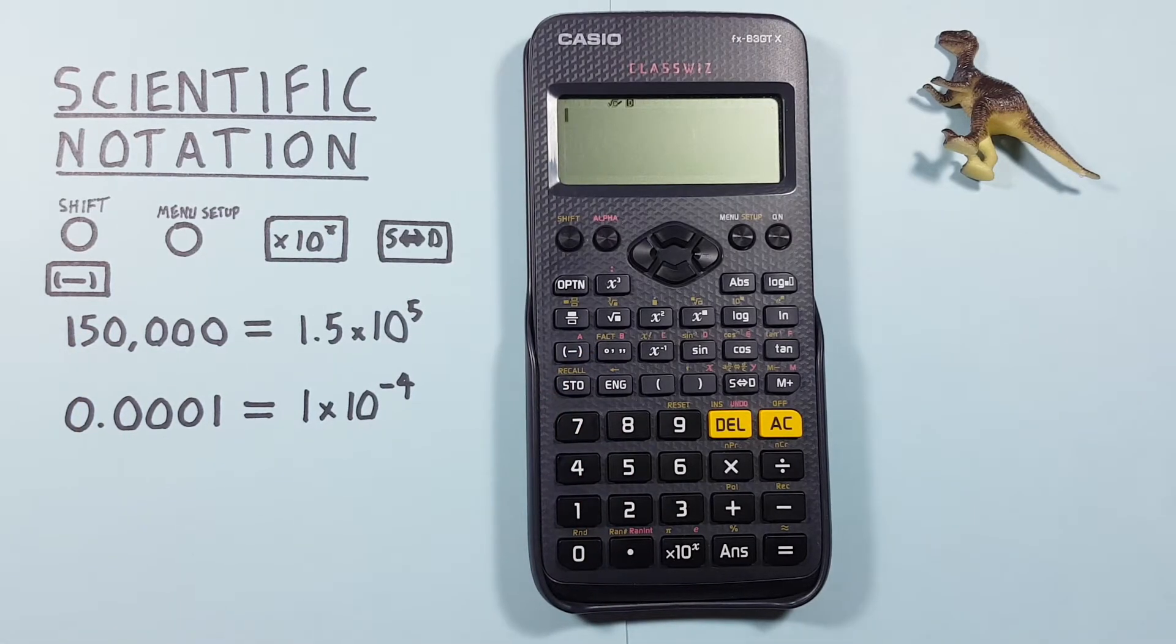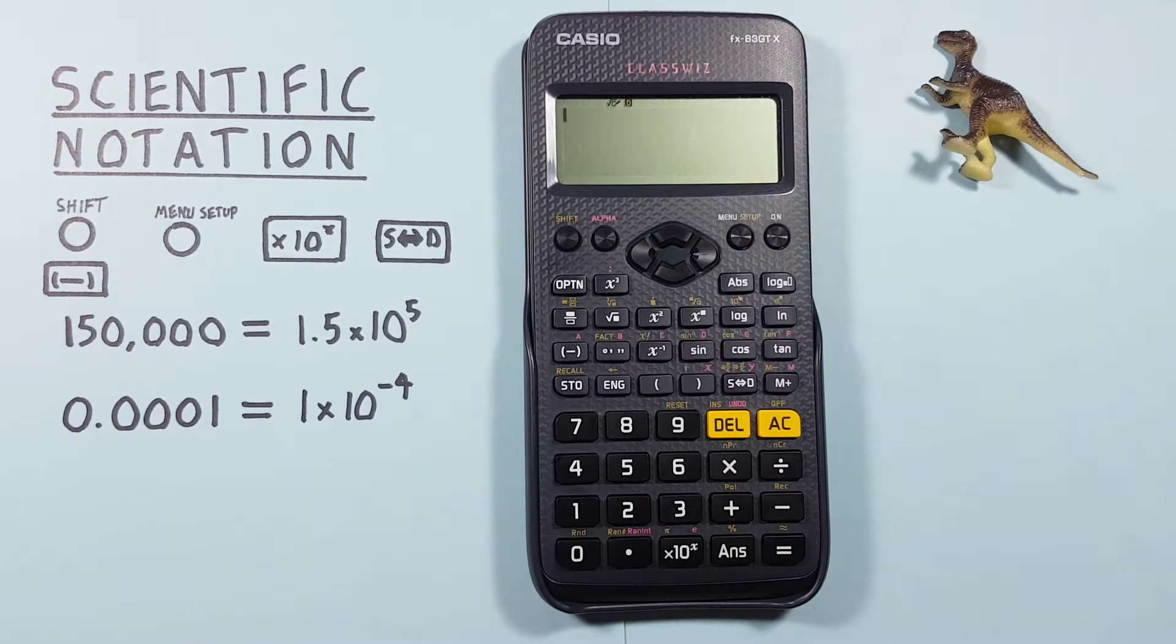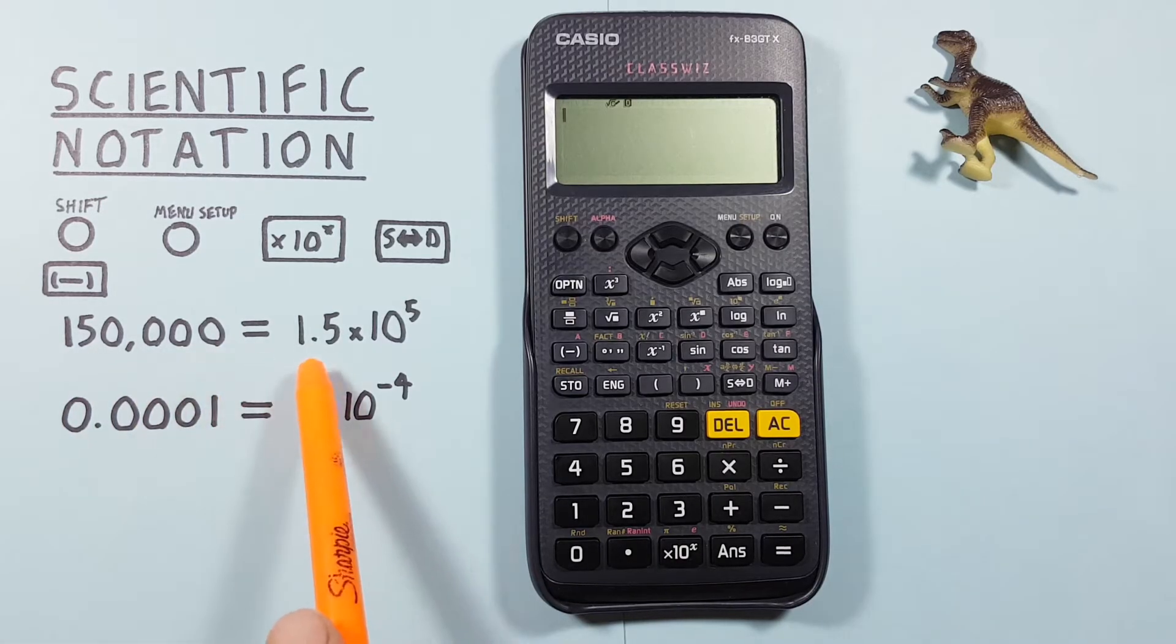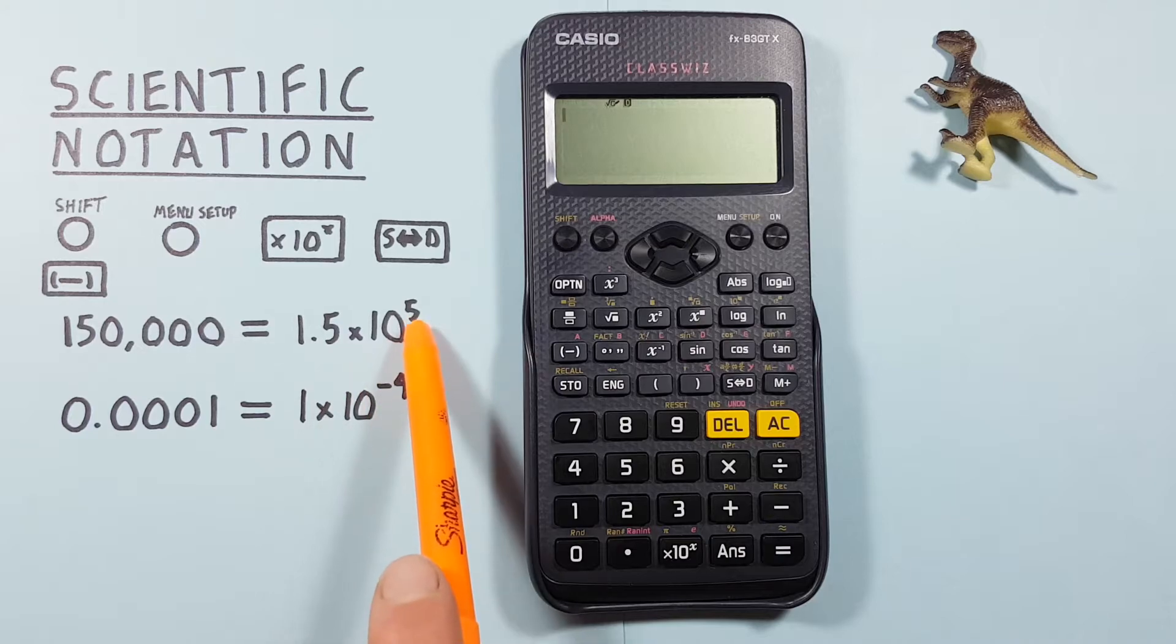We can use scientific notation on this calculator to make really large or really small numbers more manageable. It allows us to write a number like 150,000 as 1.5 times 10 to the power of 5.